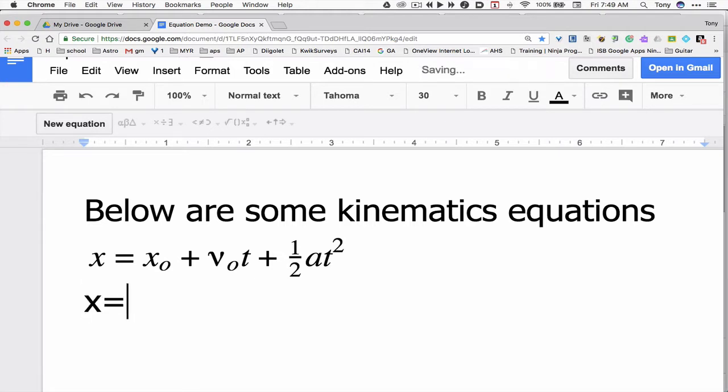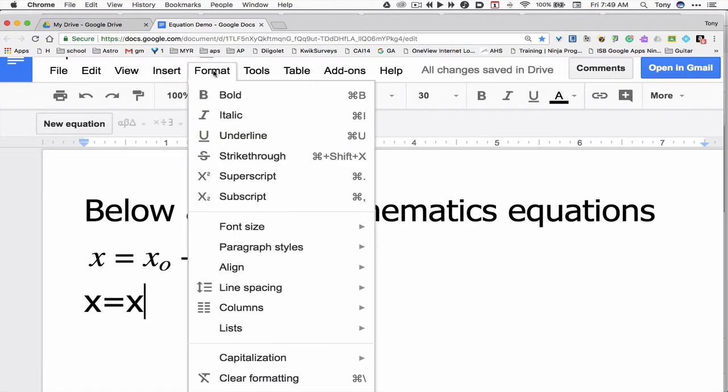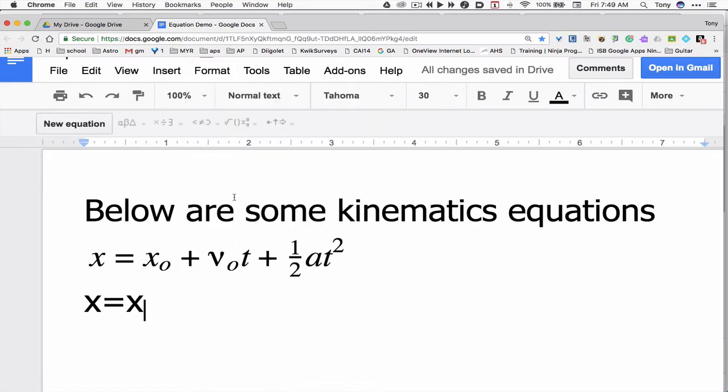I'm going to start by typing X equals and then I'll type X. Now I need a subscript so I'll go to the format menu and I'll go down to subscript. Notice there are keyboard shortcuts but I'm going to keep using the menu so you can see what I'm doing. Now everything I type from here on out will be below the baseline. So I'll type a lowercase o for my zero.